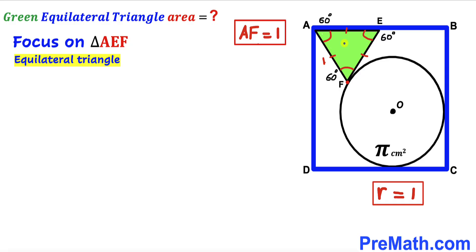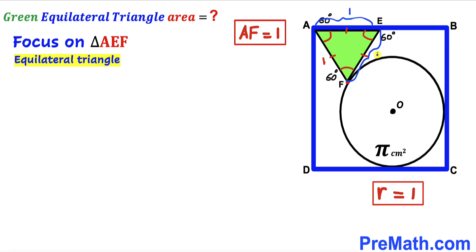Focusing again on the green shaded equilateral triangle AEF: since it is equilateral and we have established that side AF = 1 cm, all other side lengths are also 1 cm. Therefore the side length of this green shaded equilateral triangle is 1 cm.